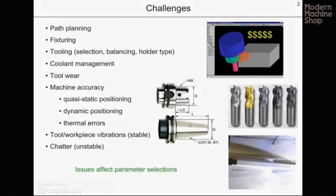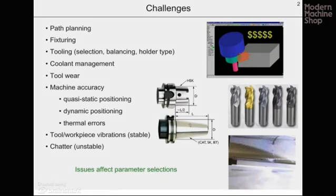There are a number of challenges associated with setting up a machining operation. These include appropriate path planning, fixturing when necessary, tooling selection — which may include balancing of the tooling and selection of the holder type — and coolant management and tool wear, which are often closely coupled. We must also ensure that the machine is sufficiently accurate, considering quasi-static positioning errors, dynamic positioning errors, and thermal errors, which depend on the thermal state of the machine.